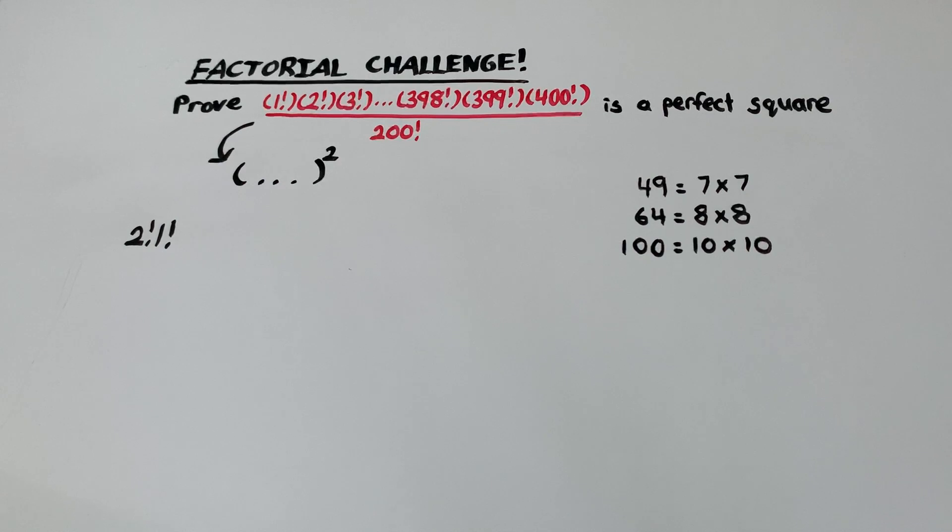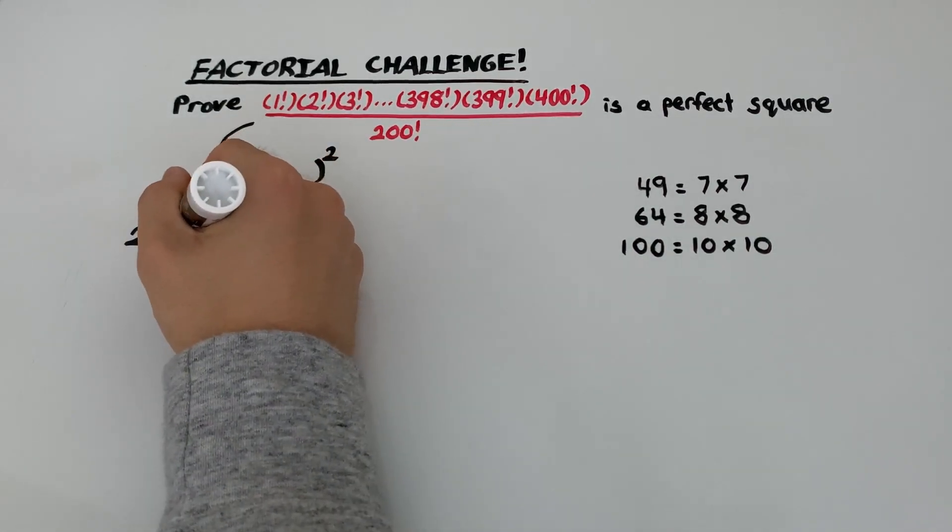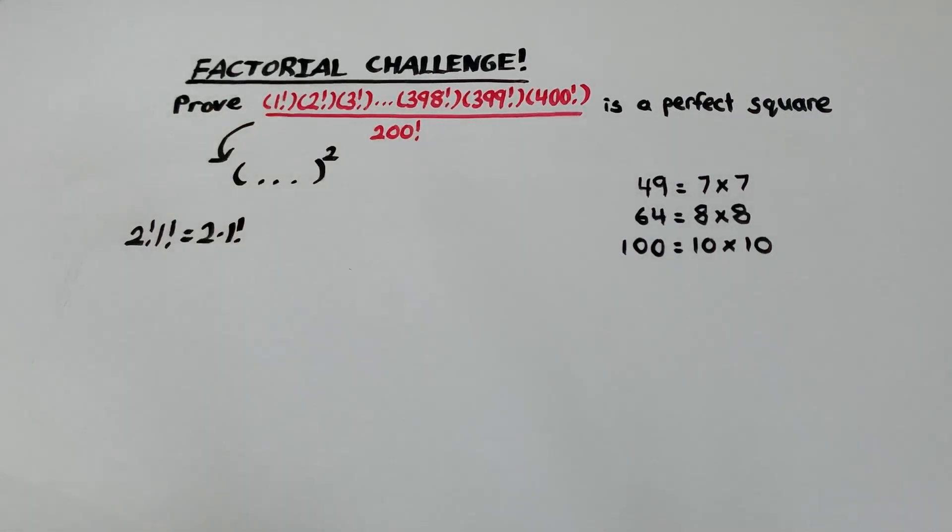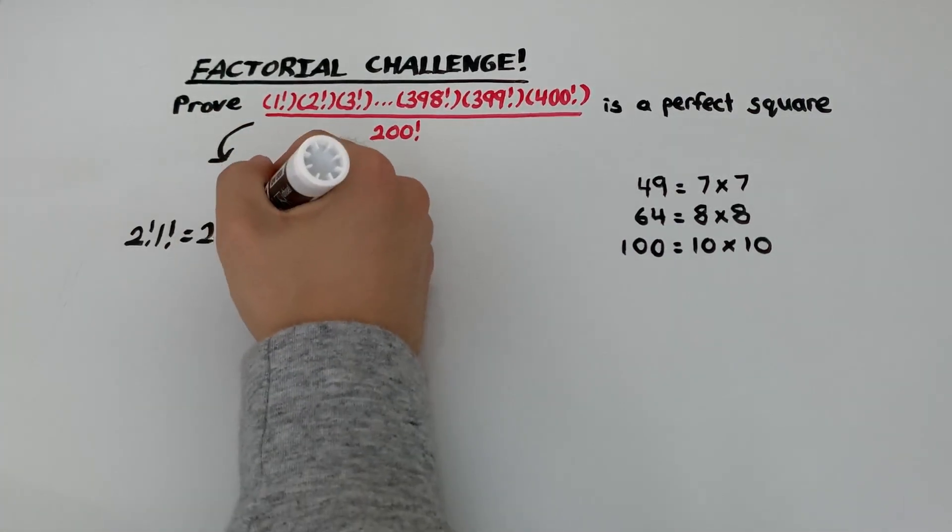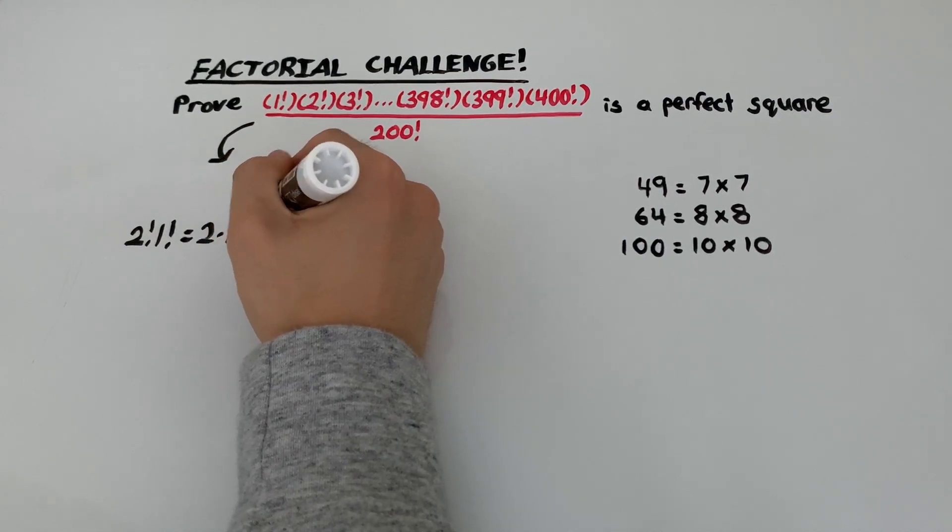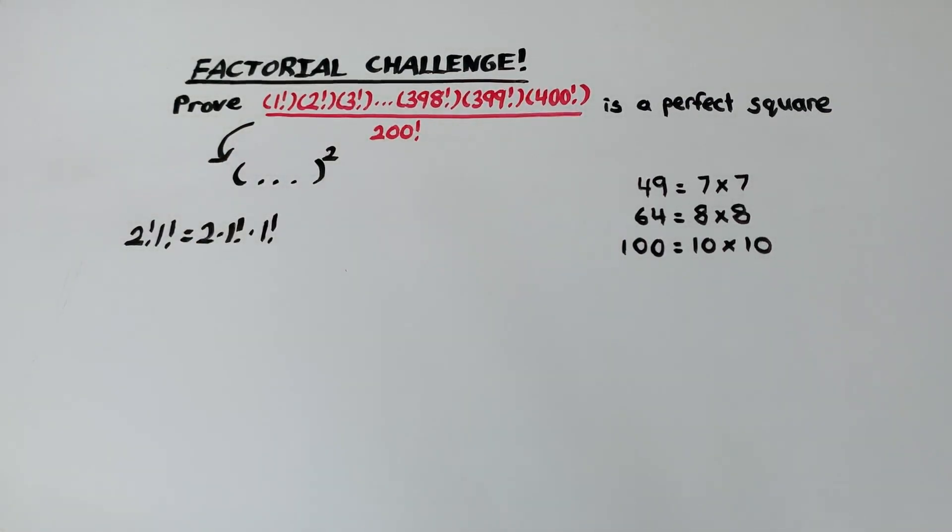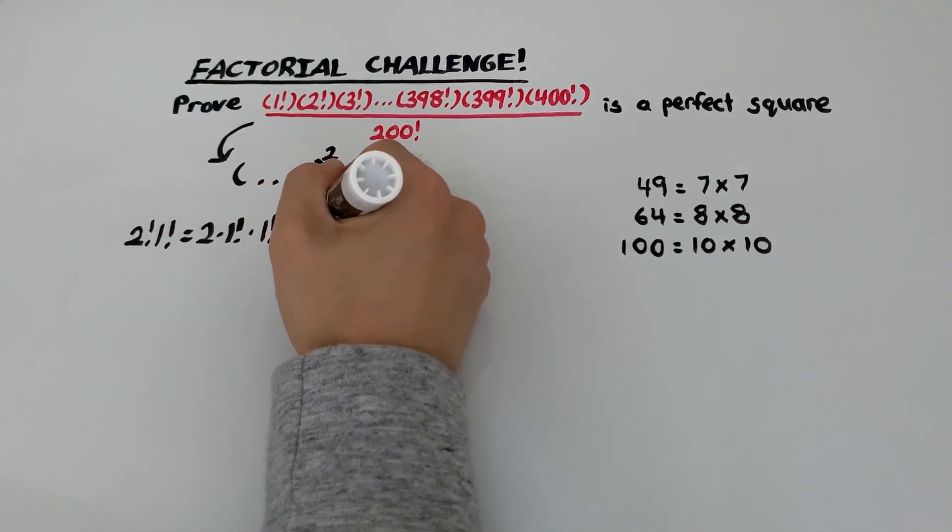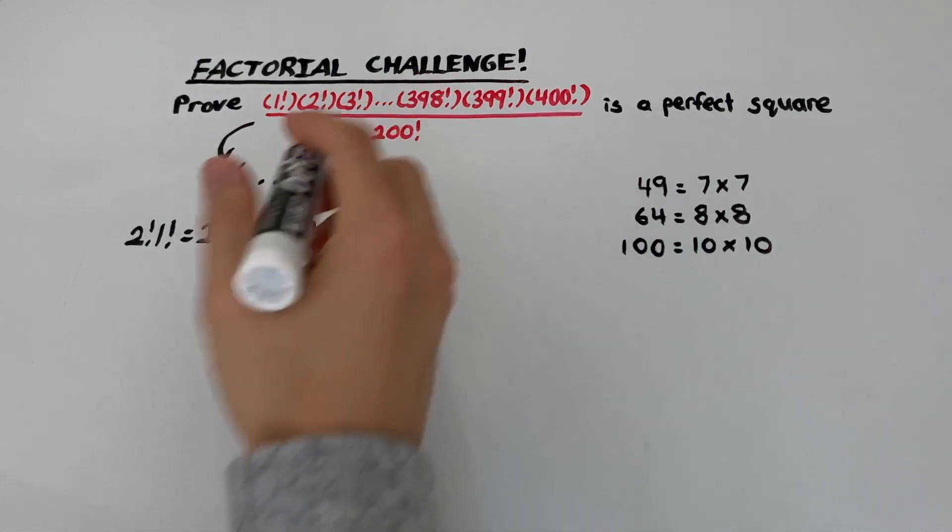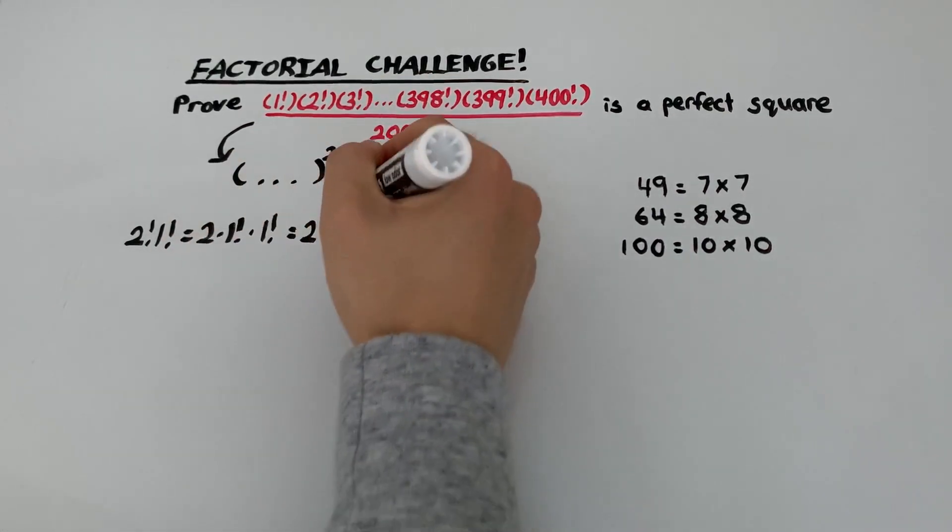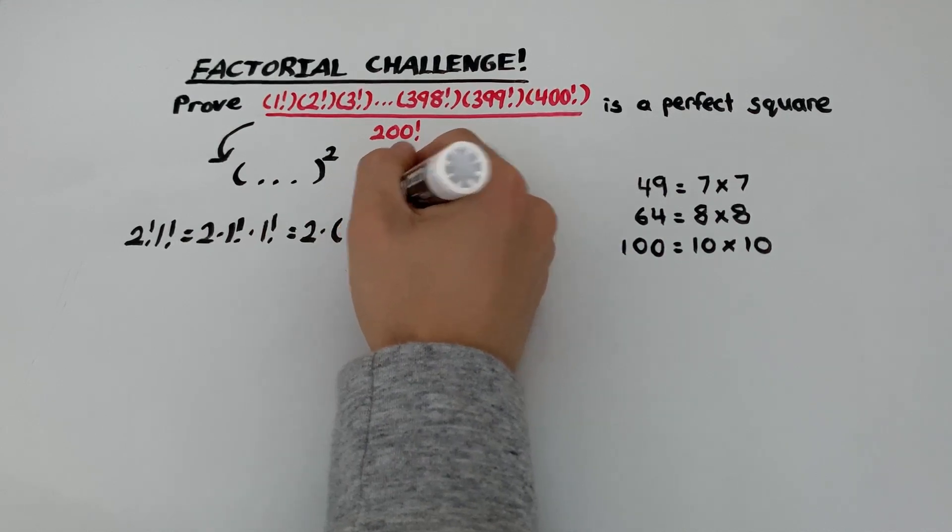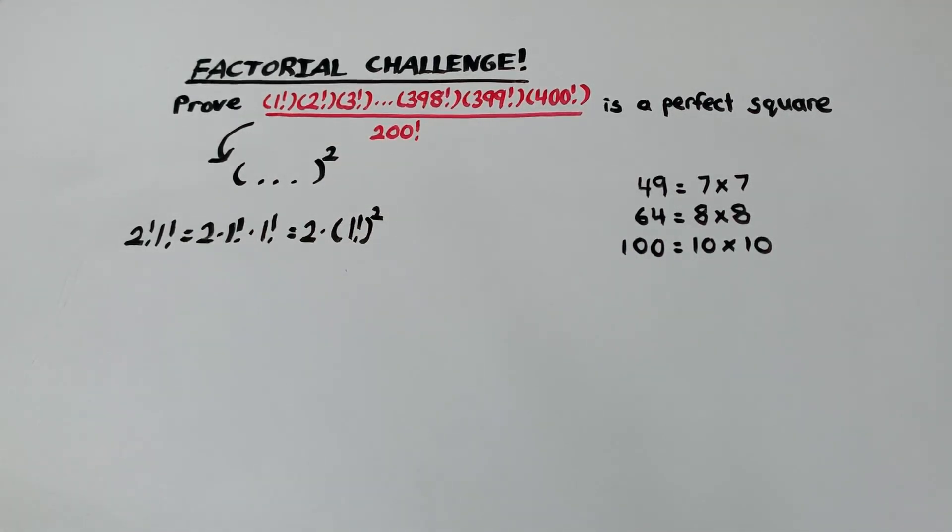And the definition of 2 factorial is the same as 2 times 1 factorial. And then we have to multiply another 1 factorial. So we have a 2. But then we also have 1 factorial multiplied by itself, which can be rewritten like so.